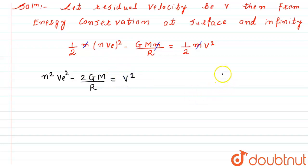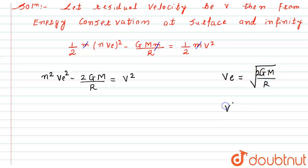Now we know that the escape velocity is given by vₑ = √(2GM/r). If we square both sides, then vₑ² = 2GM/r. So in place of 2GM/r, we can substitute vₑ².